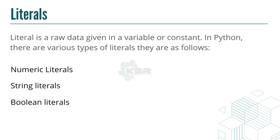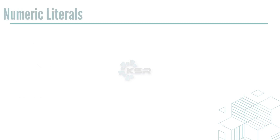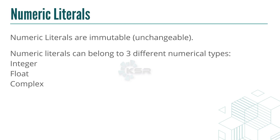A literal is raw data given to a variable or constant. In Python, there are various types of literals: numeric, string, and boolean. As for None, there is nothing much to learn — it simply represents an empty or null value.